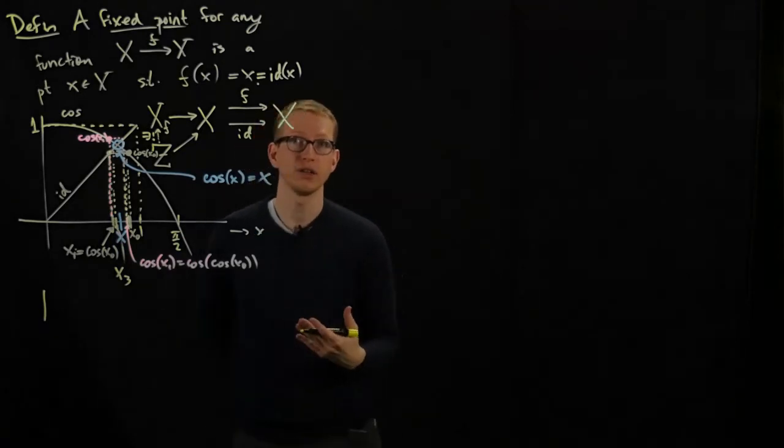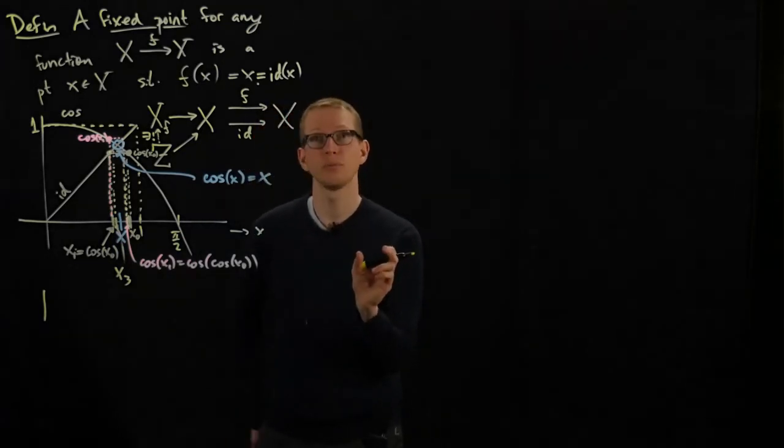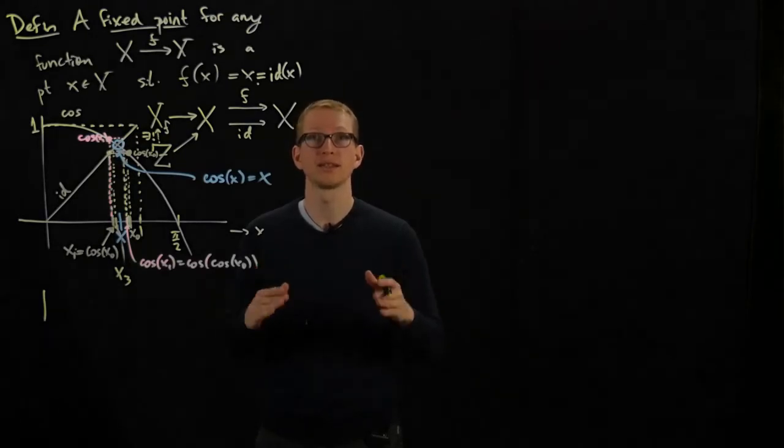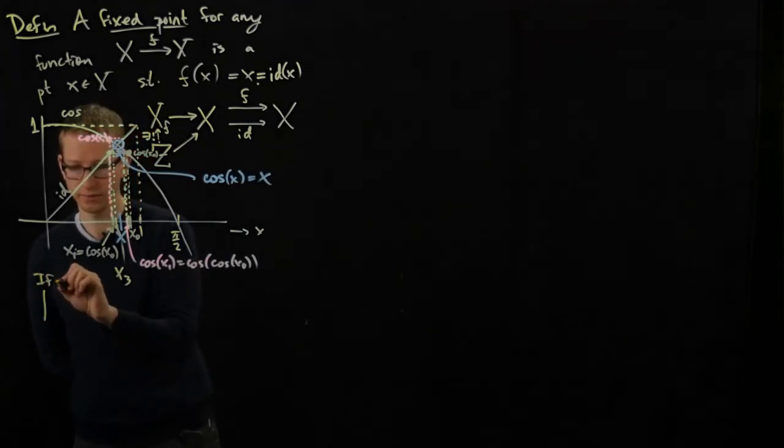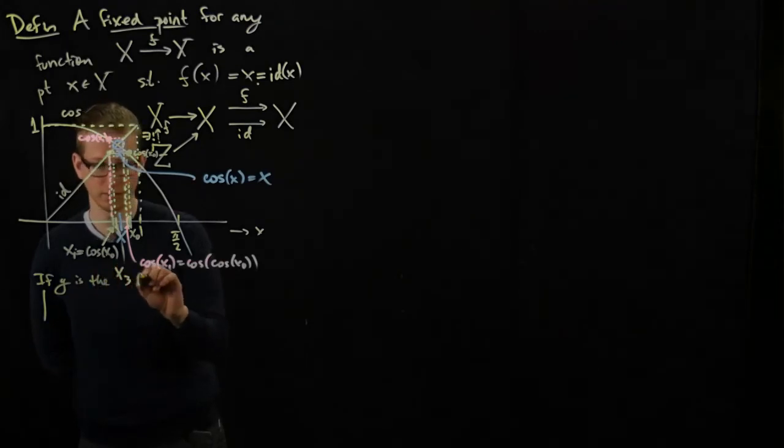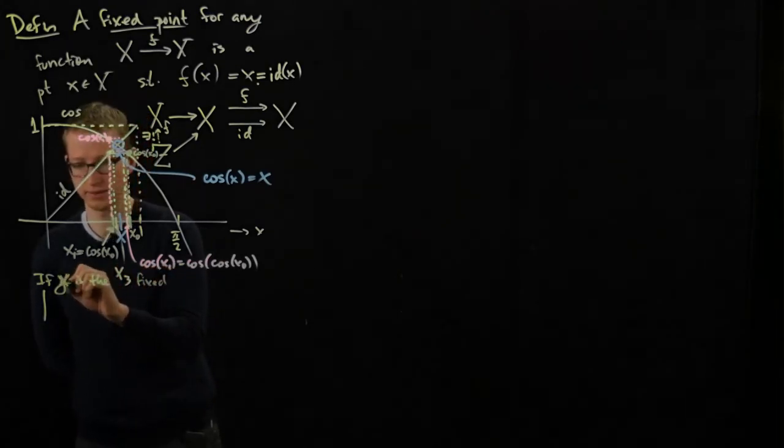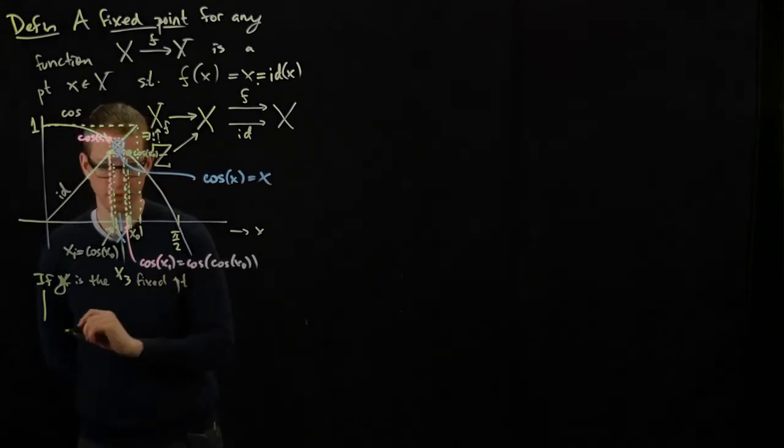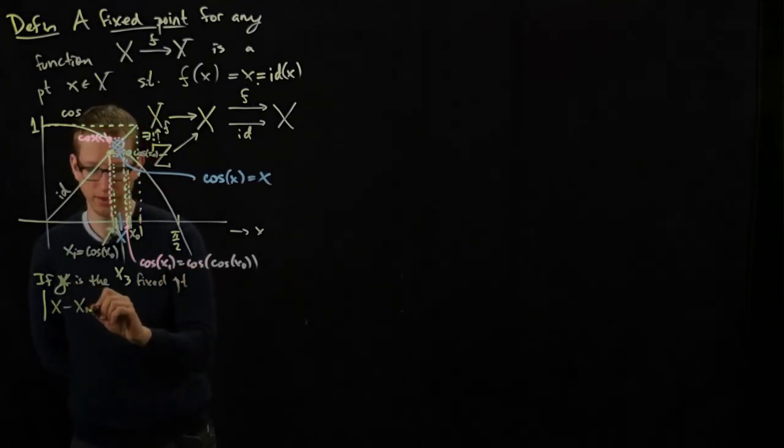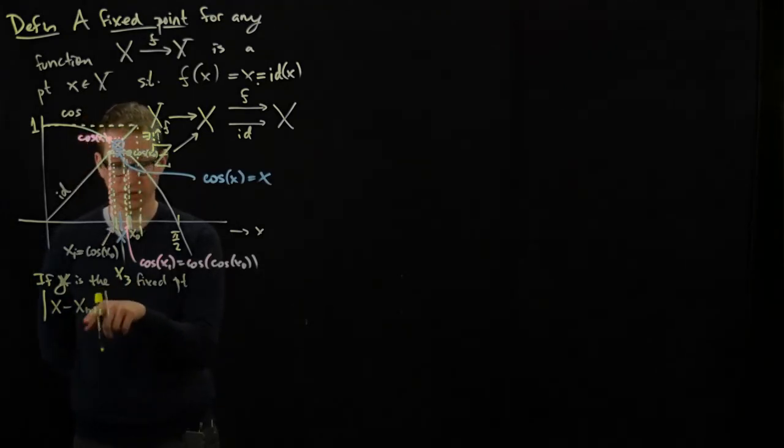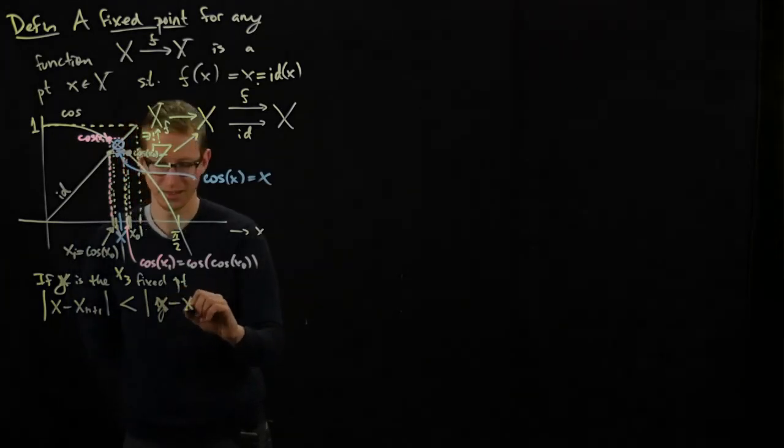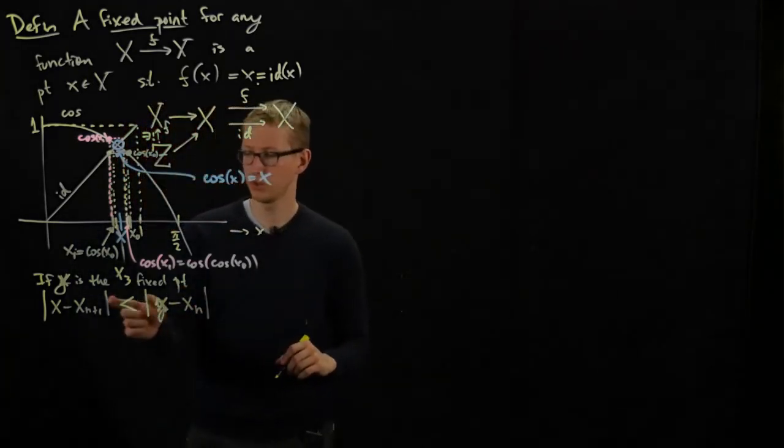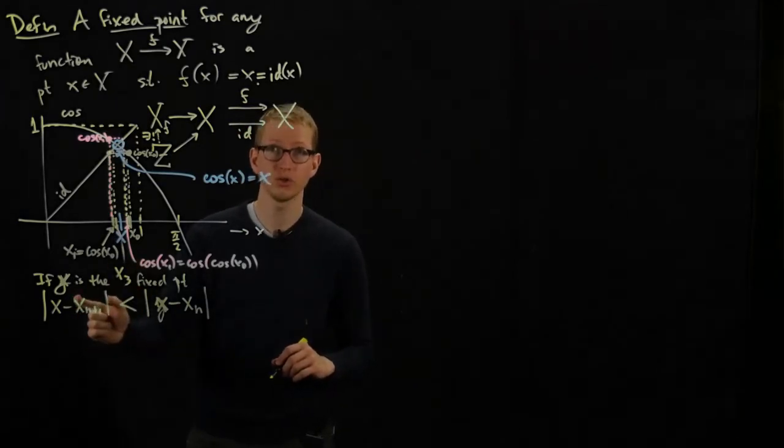One of the things that we notice about this function is that it satisfies the condition from this sequence of points that the distance between two successive points is getting smaller and smaller. And because we're not sure what exactly our initial point is, we want to make sure that after applying the function, the distance between successive points is decreasing. And the way we write that is that if x is the fixed point, then we notice that |x - x_{n+1}|, which is this from our successive approximation, is less than |x - x_n|. So the distance between successive approximations is getting closer and closer to that fixed point.